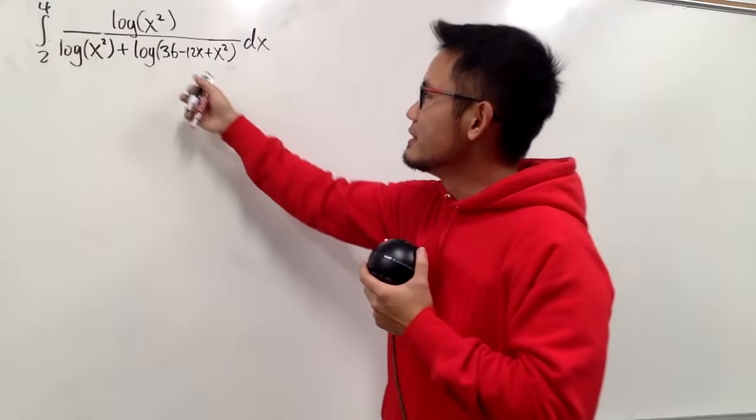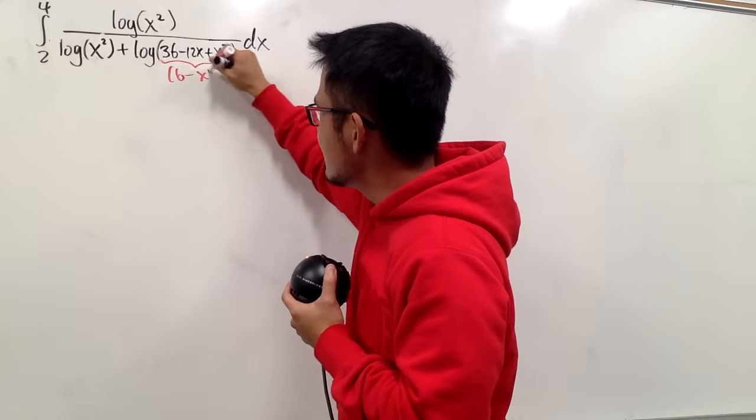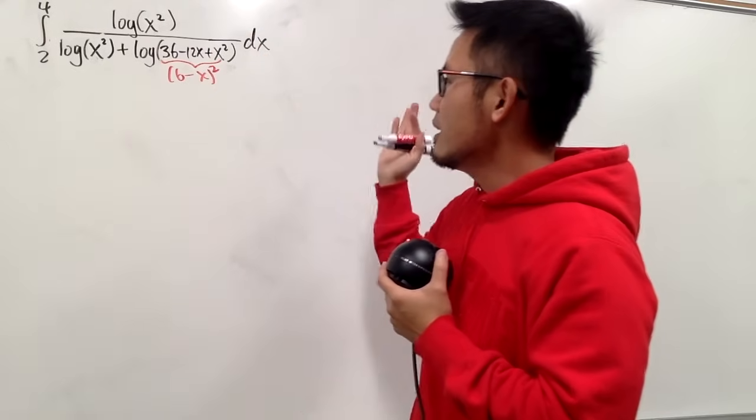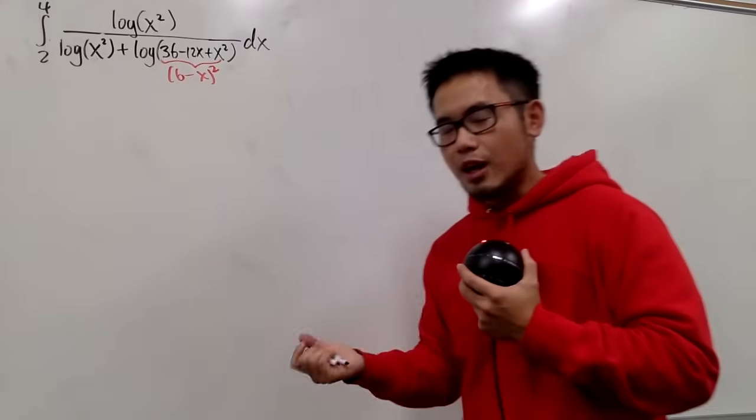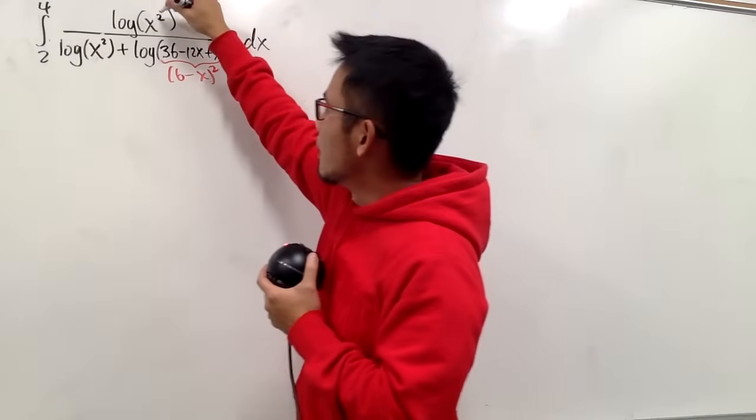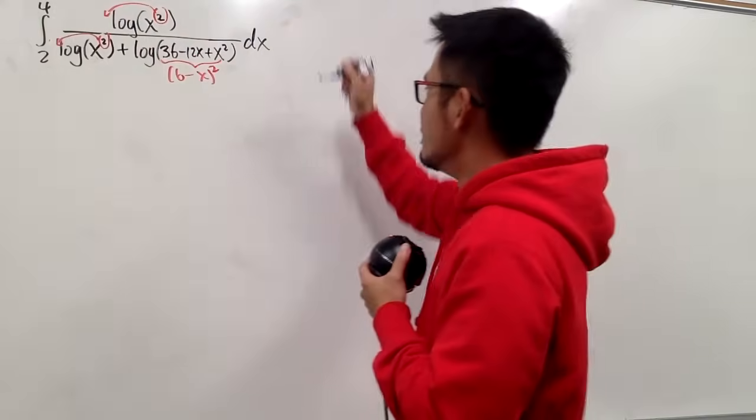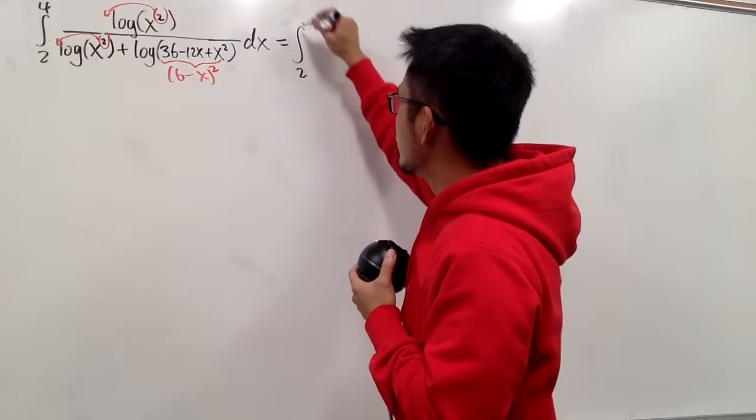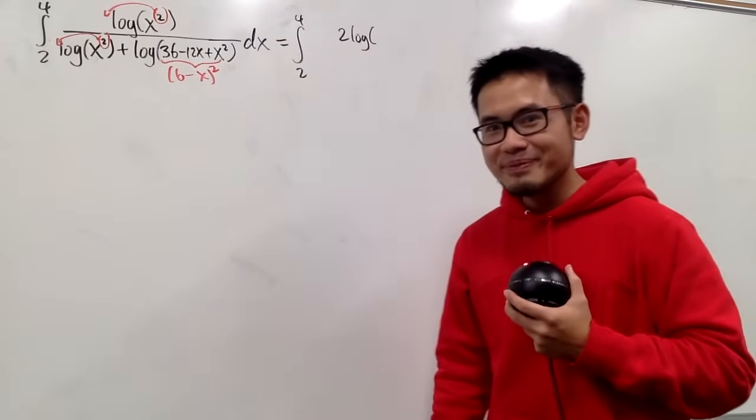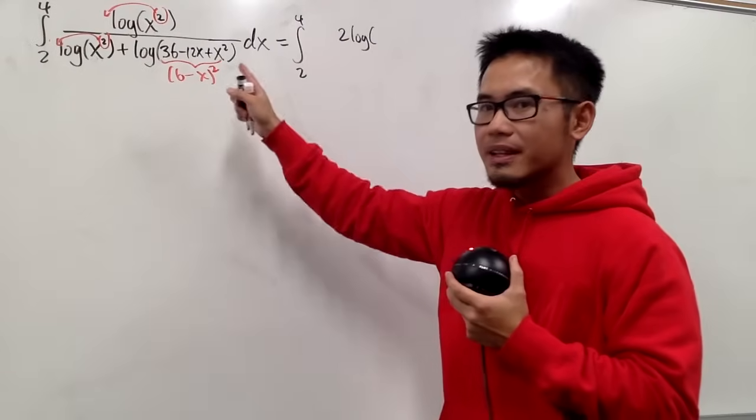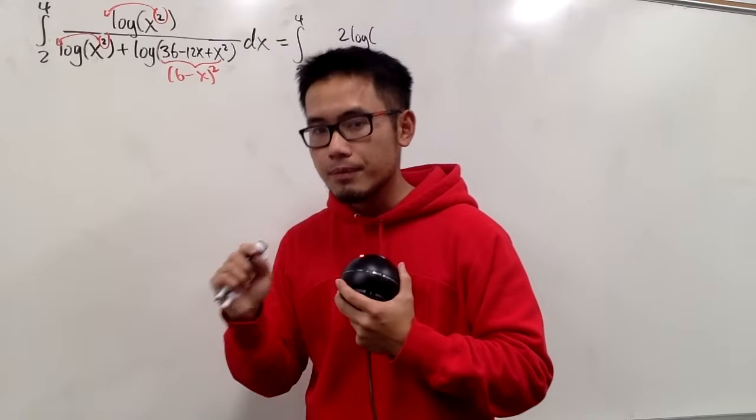Well, I do notice that this is 36 minus 12x plus x². We can factor it with our algebra power. This is just (6 - x)². And now, all of the input is just something to the second power. And with one of the log properties, we can bring the power to the front, right? So if you would like, you can do that. Let's make that happen first.